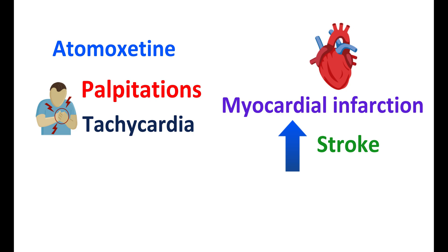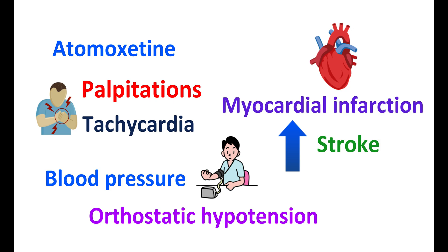This medication can also increase the blood pressure. That's why monitoring of blood pressure is required before as well as during the use of Atomoxetine. This drug can also increase the risk of orthostatic hypotension, a sudden drop in blood pressure while changing posture, so in such people sudden falling can be observed.